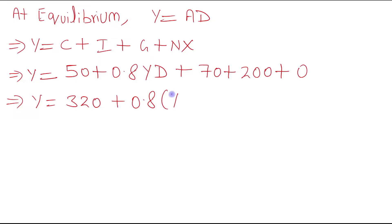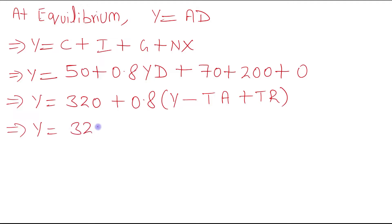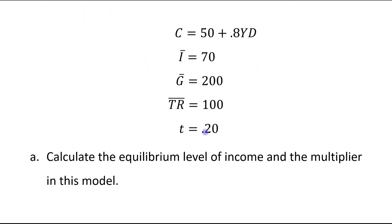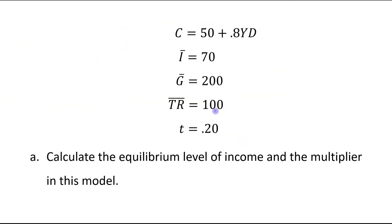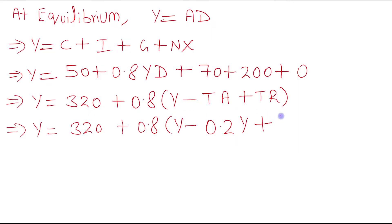So Y equals 320 plus 0.8Yd. Disposable income Yd equals Y minus taxes plus transfers. Taxes use the proportional tax rate of 0.2, so we write 0.2Yd, and transfer payments are given as 100.